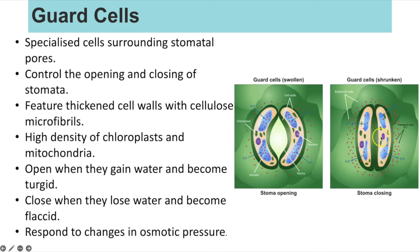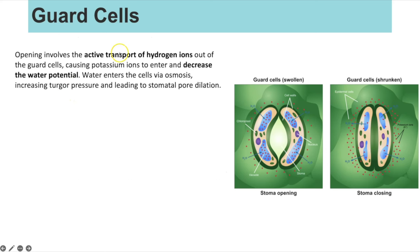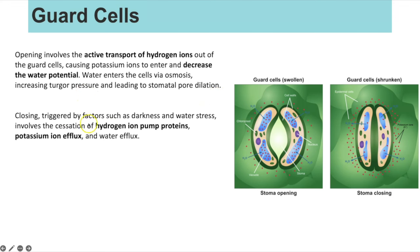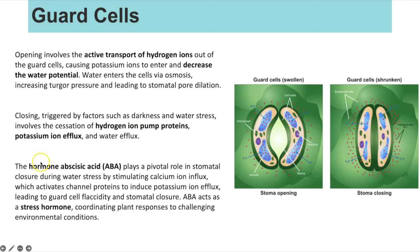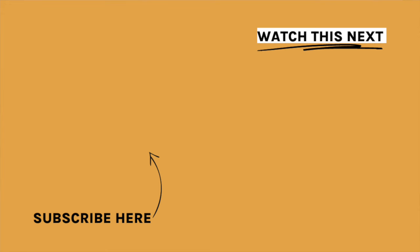Guard cells close when they lose water and become flaccid, moving close together so the stomata closes. The opening involves active transport of hydrogen ions out of the guard cells, causing potassium ions to enter, decreasing water potential so that water enters by osmosis, increasing turgor pressure and causing stomatal dilation. Closing is triggered by darkness and water stress, involving stopping the hydrogen ion pump and potassium ion efflux. The hormone ABA plays a pivotal role in stomatal closure during water stress by stimulating calcium ion influx, activating channel proteins to induce potassium ion efflux, causing guard cells to become flaccid and the stomata to close. ABA acts as a stress hormone coordinating plant responses to challenging environmental conditions.